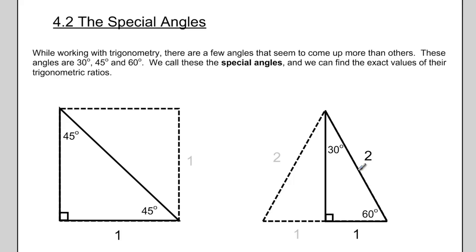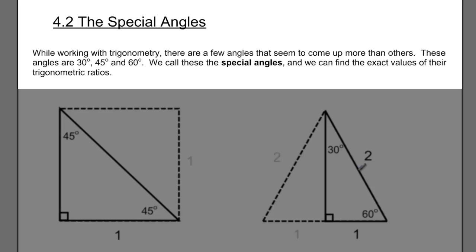Our second lesson in our unit on trigonometry involves something called the special angles. When we work with trigonometry in this class, in future courses, and in the real world, there are a few angles that come up more often than others. These are the 30 degree angle, the 45 degree angle, and the 60 degree angle. You often see these in construction, woodworking, designing houses, blueprints — these angles come up all the time. We call them the special angles simply because we see them so frequently.